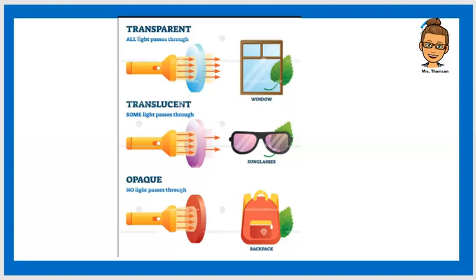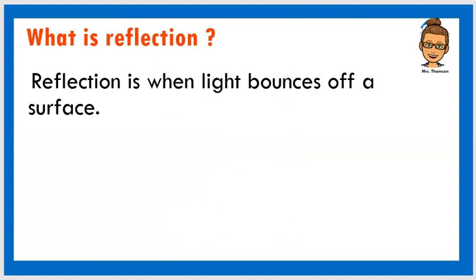And we also learned the word opaque, that no light passes through these objects and these are the objects that will cast a shadow. So we learned that the last time we were doing science. So this time we're going to be looking at something called reflection.